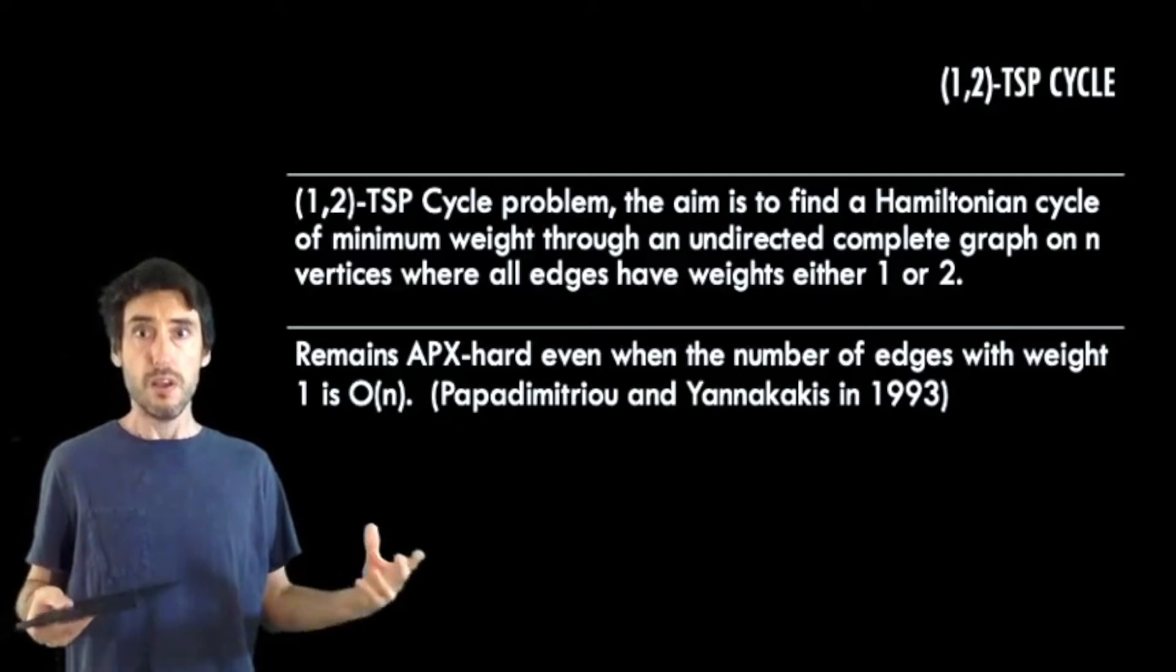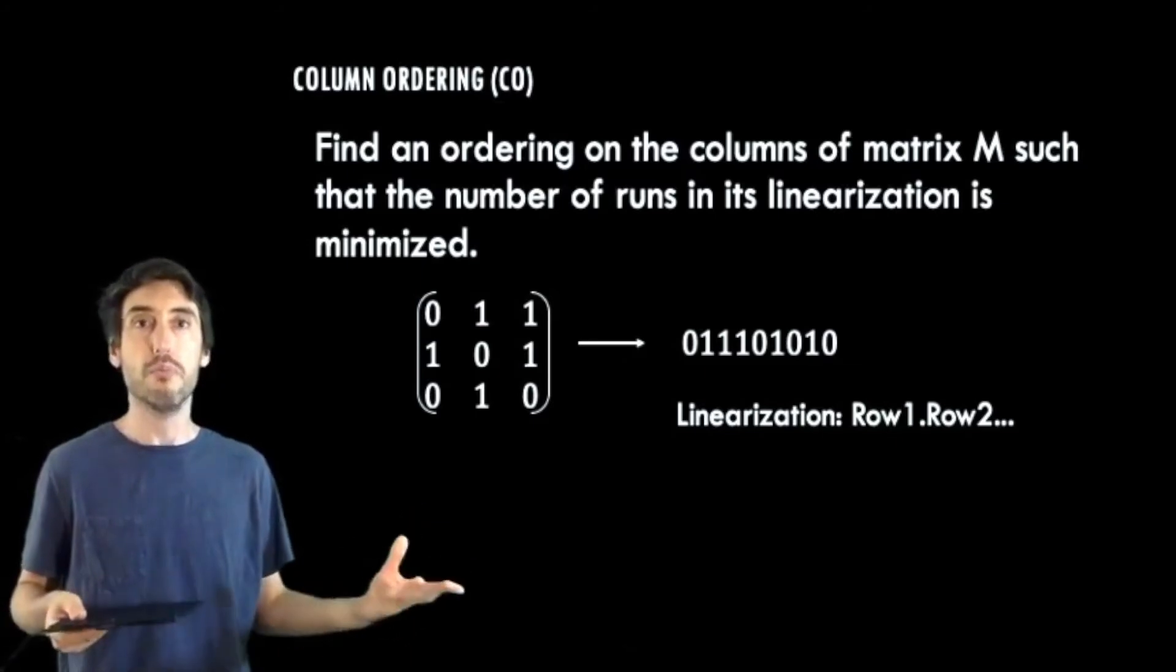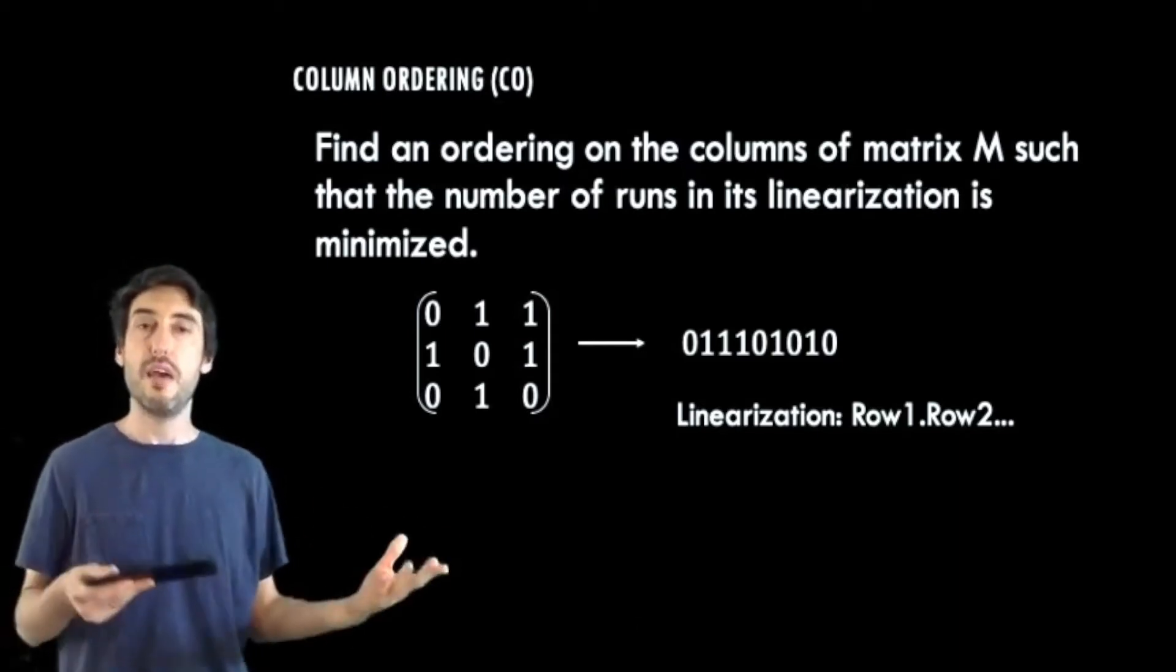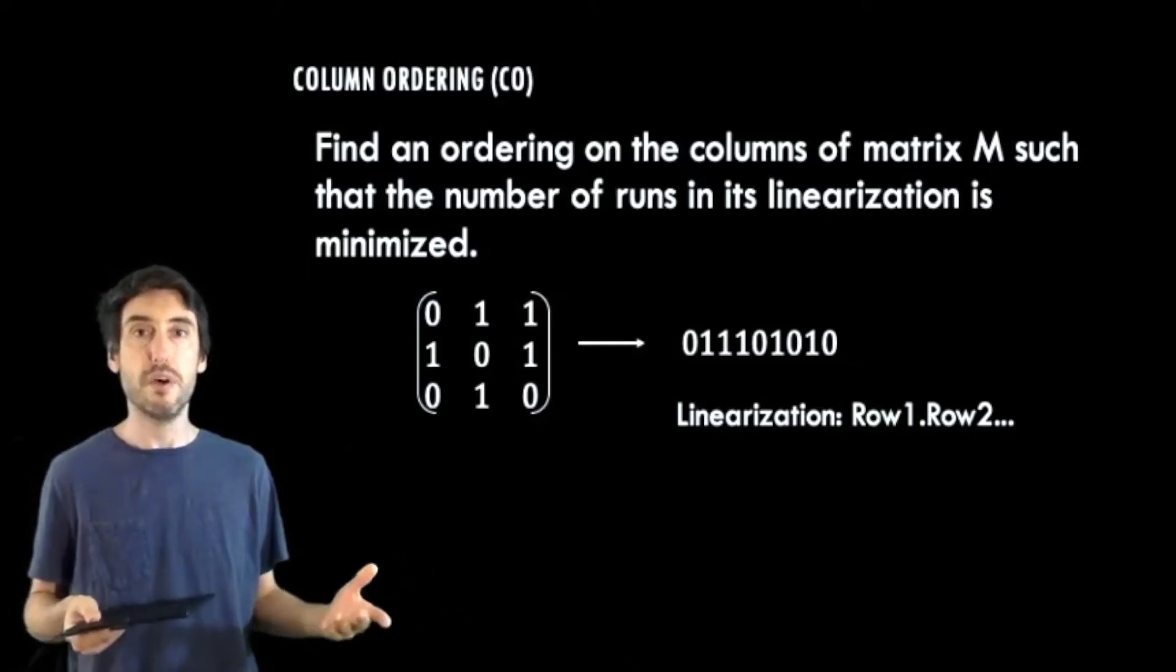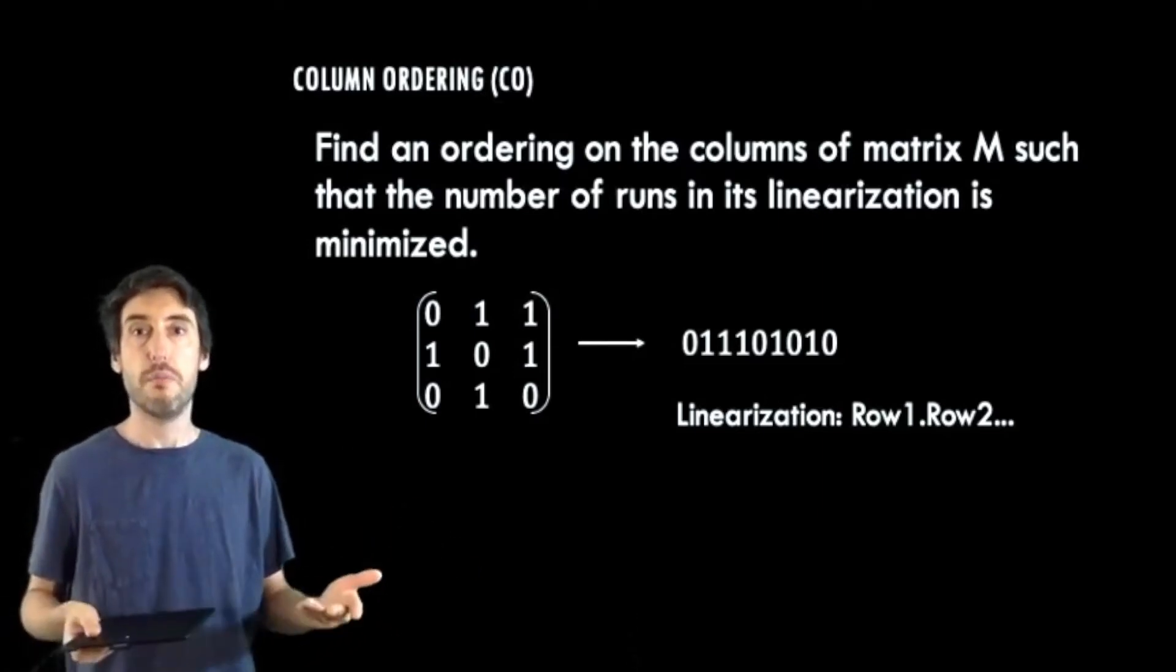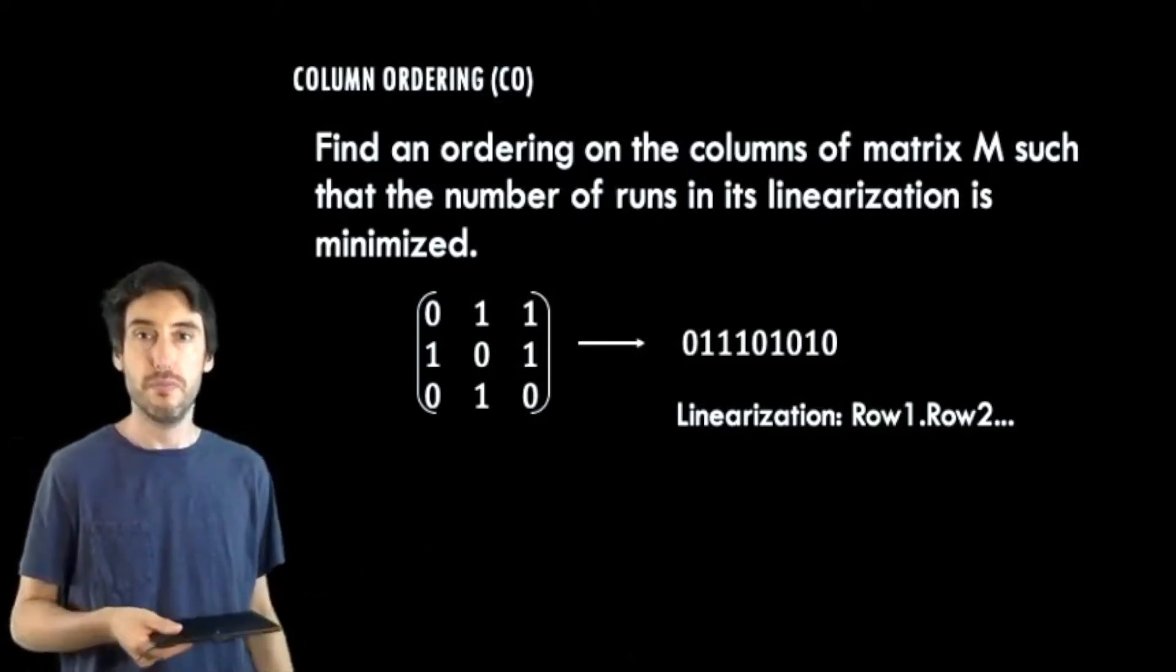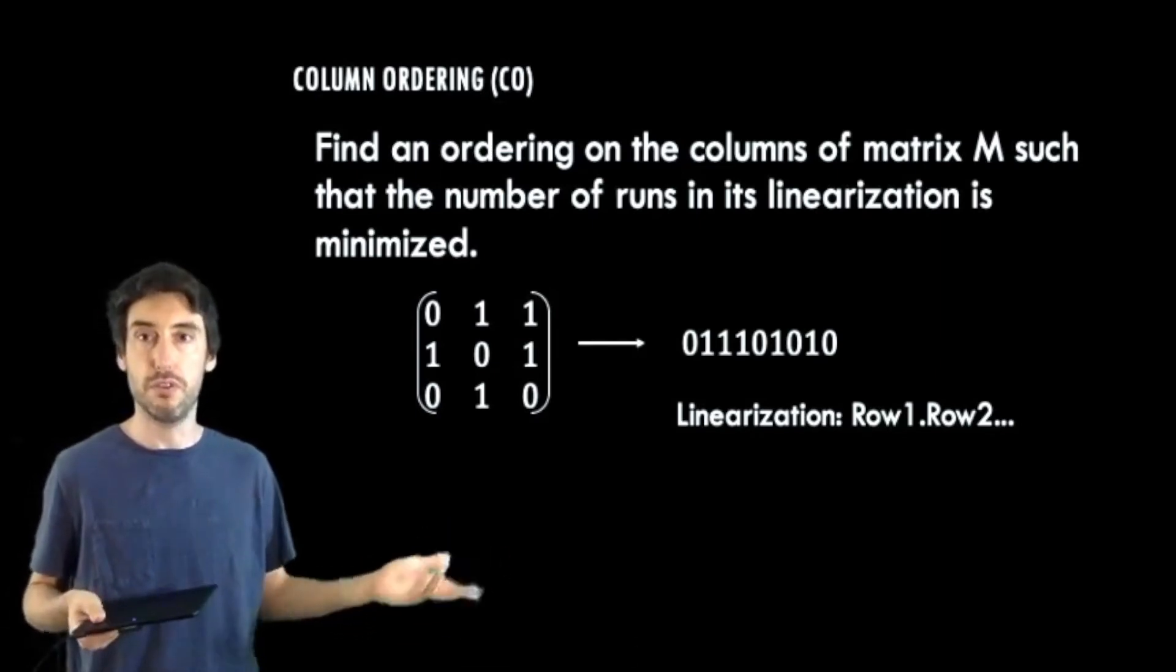So our first L reduction will be from 1,2-TSP path to this problem we call column ordering. Now in this problem, we're given a binary matrix, and we wish to find an ordering on the columns that minimizes the number of runs in the linearization of the matrix. And here by linearization, we mean the string that's obtained by concatenating the rows from top to bottom. A small example is provided here, where the first row's values are 0, 1, 1, and the first three symbols in the string are 0, 1, 1. The next row's values are 1, 0, 1, and those are the next three symbols in the string, and so on.